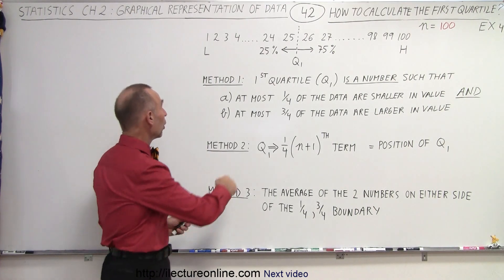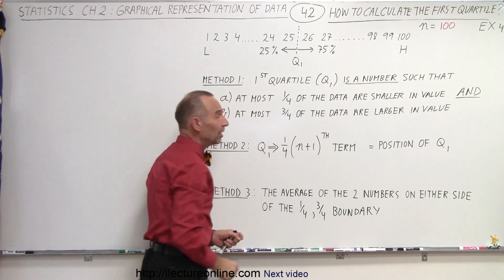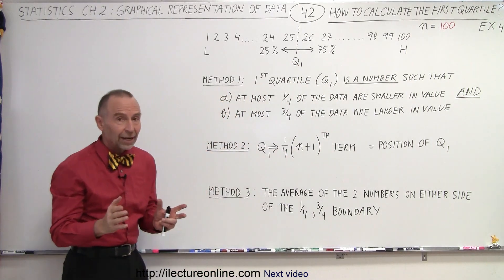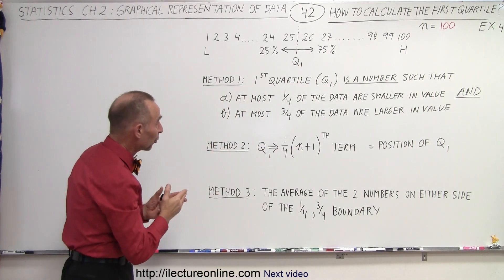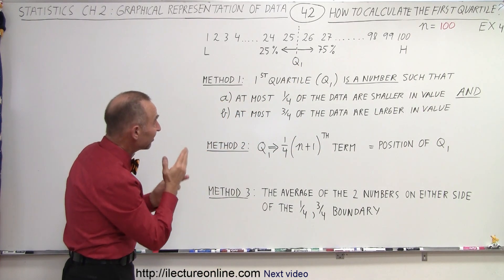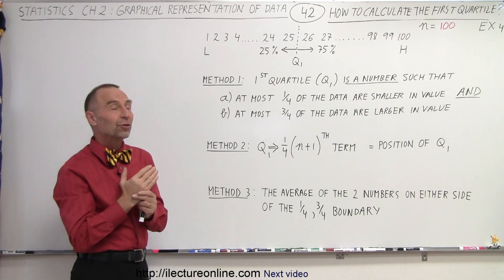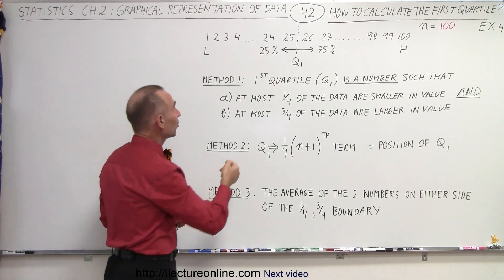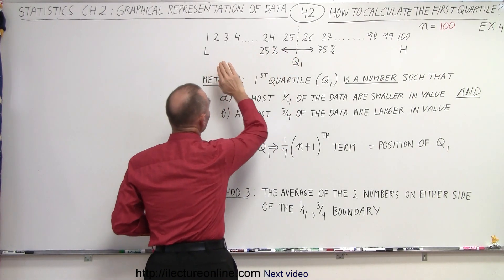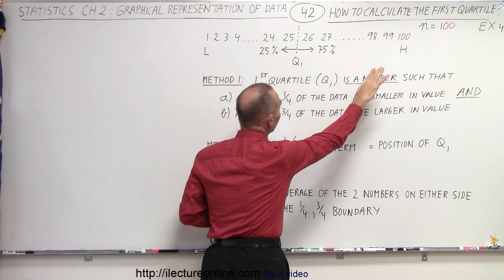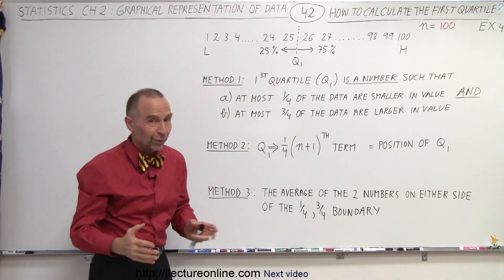The low is 1 and the high is 100. The first quartile is exactly between 25 and 26, because you have exactly 25% of your data points to the left and 75% of your data points to the right.